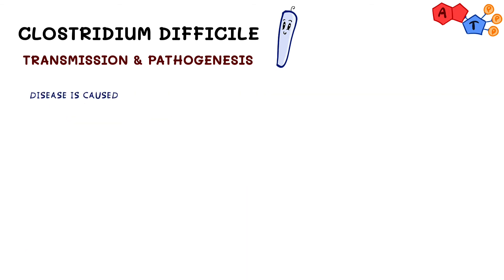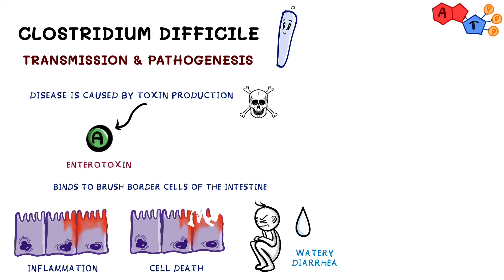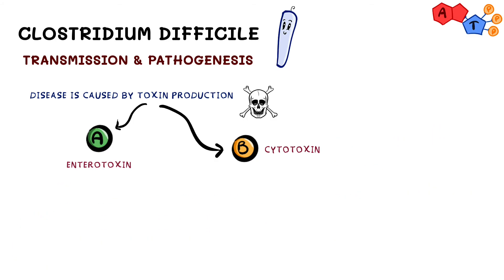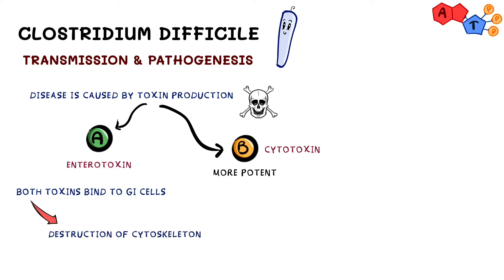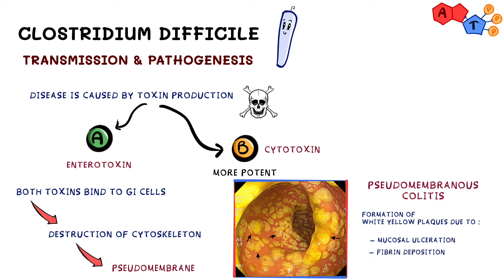C. diff causes disease by production of toxins. Two of these include toxin A, which is an enterotoxin that binds to brush border cells of the intestines, causing inflammation, cell death, and watery diarrhea. The second is toxin B, also known as cytotoxin, which causes actin depolymerization leading to disruption of the cytoskeleton and cell necrosis. Toxin B is much more potent than toxin A. Both toxins bind to GI cells, cause destruction of the cytoskeleton, leading to pseudomembrane formation in the colon — white-yellow plaques due to mucosal ulcerations, fibrin deposition, and inflammatory cells.